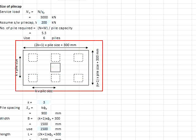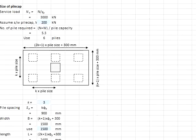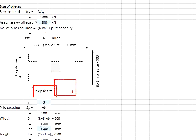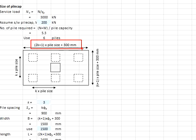Next, determine the dimensions of the pile cap. You may refer to the diagram to obtain the dimensions, or work them out yourself. The spacing of the piles equals k times the pile size. Along the xx direction, there are 2 times the pile spacing, plus one full pile size (half on each side), plus 150 mm on each side. That gives the formula: (2k + 1) × pile size + 300 mm.